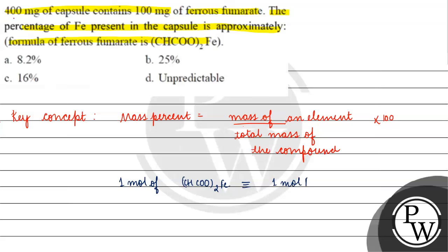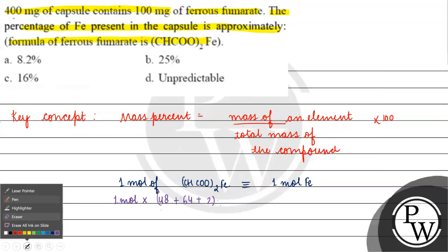Agar one mole of ferrous fumarate rae ga, we have two carbon atoms, right? Now 24 into 2, kitna hojayega, 48 plus 2 oxygen atoms hai, right? 2 oxygen atoms hai, so kitna ho gaya 32 into 2, 64.